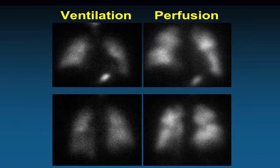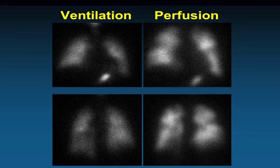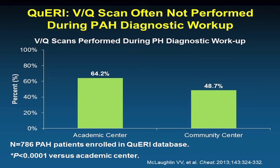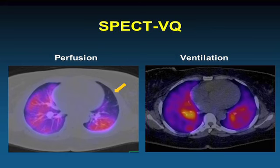On a VQ scan, you are looking for mismatched perfusion defects — areas with ventilation but no perfusion. VQ with SPECT fused with CT produces colored images that make interpretation much easier than planar images, allowing easier visualization of perfusion defects. CT scan remains a very important complementary test, helping quantify the degree of vascular obstruction, even when standard VQ interpretation may have limitations.